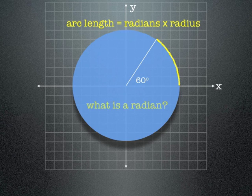Arc length is equal to radians times radius, it's just a formula. And now you're probably wondering, what is a radian?